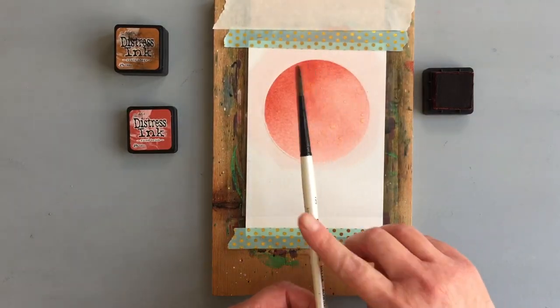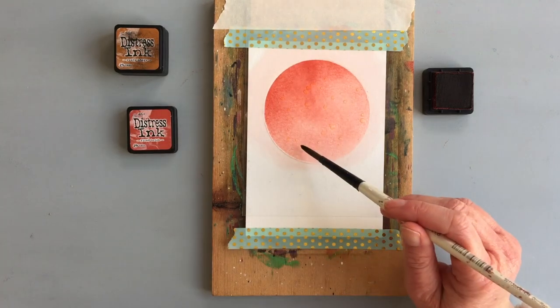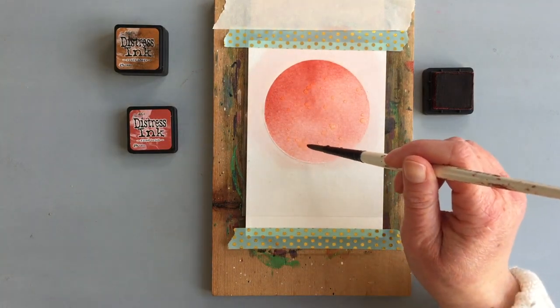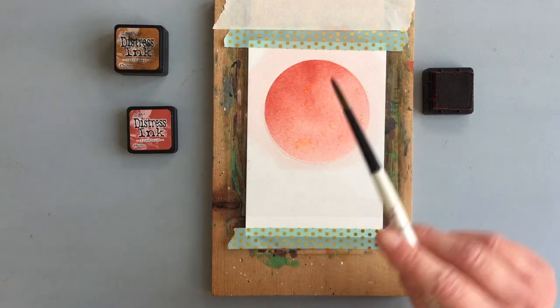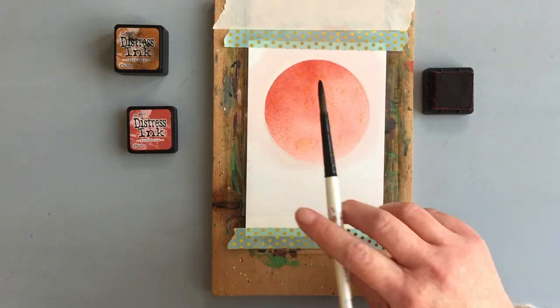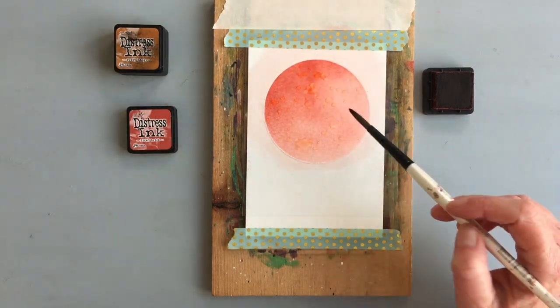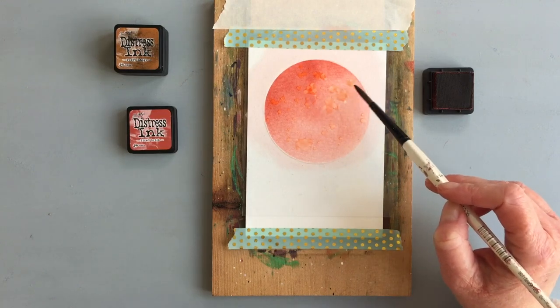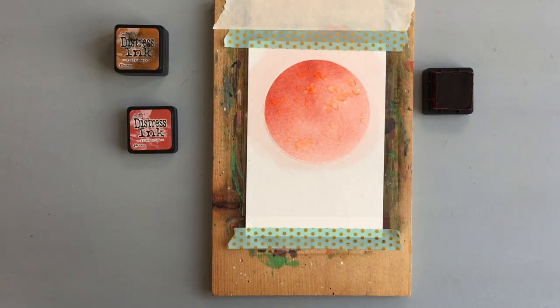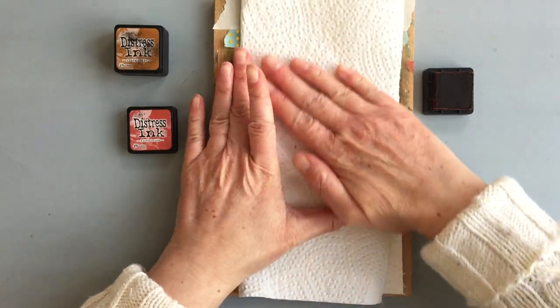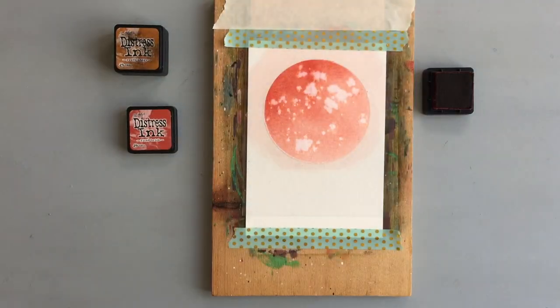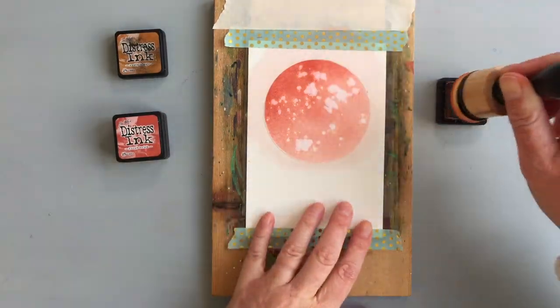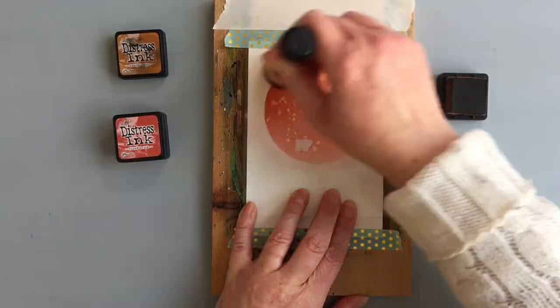After I was happy with the ink application, I sprinkled water over the circle and soaked it up with a paper towel.